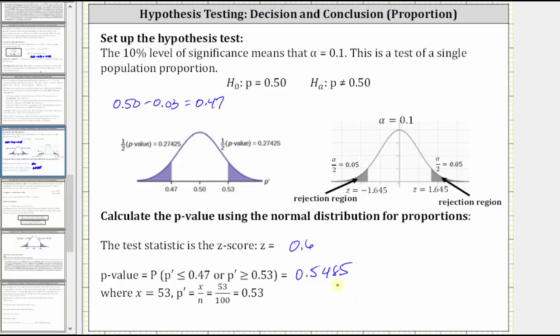Before we interpret the P value and then compare to alpha, let's take a look at the z-score of 0.6. For a two-tailed test when alpha is equal to 0.1, notice how the z-scores are 1.645 on the right and negative 1.645 on the left. Well, notice how the z-score of 0.6 is not in the rejection region, which indicates we are not going to reject the null hypothesis.